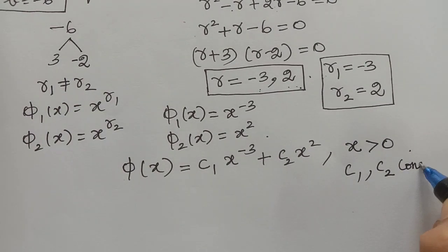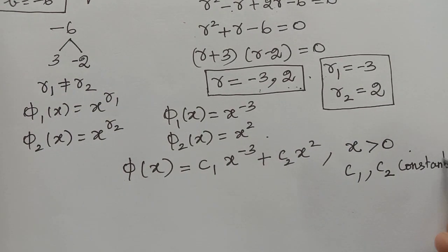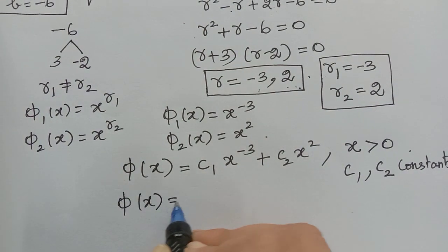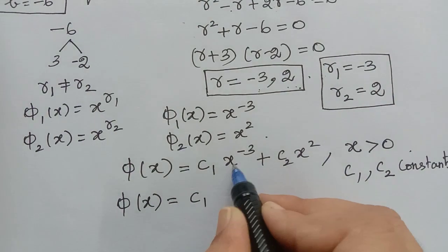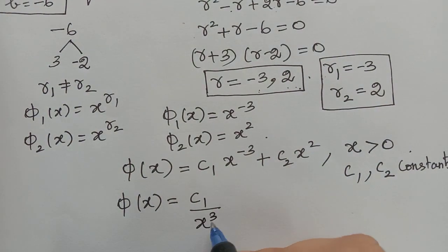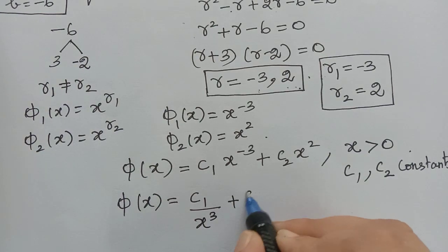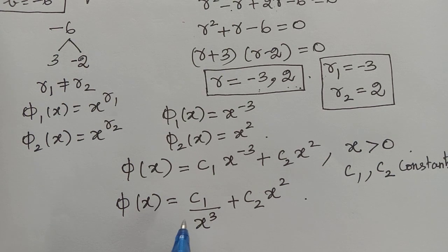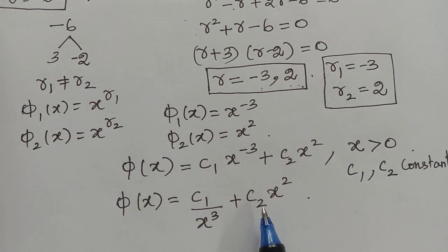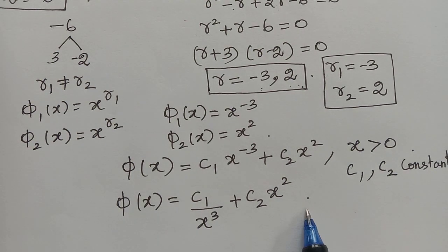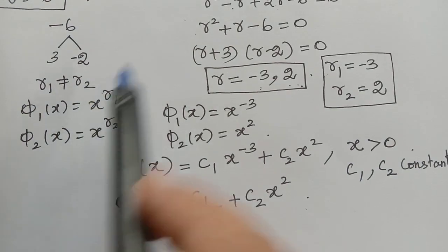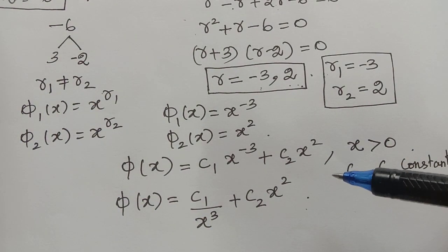This can be rewritten as phi of x equal to c1 over x cubed plus c2 x squared, and this is the solution of the given Euler equation. In our next video, we shall learn problems of the same type and also problems where the roots will be equal and also imaginary. Kindly follow the next video. Thank you.